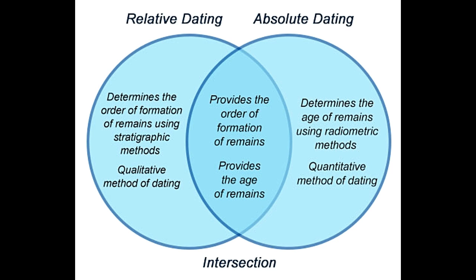Relative dating versus absolute dating. Relative dating determines if an object or event is younger or older than another object or event from history. Relative dating is qualitative. This technique helps determine the relative age of the remains. It is less specific than absolute dating. Relative dating is comparatively less expensive and time efficient. It works best for sedimentary rocks having a layered arrangement of sediments.